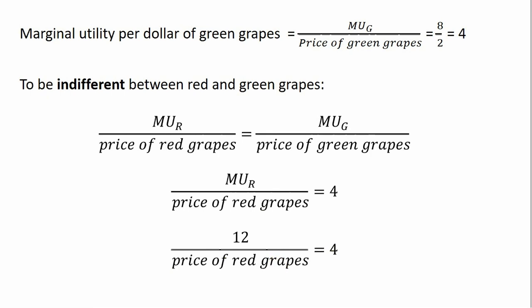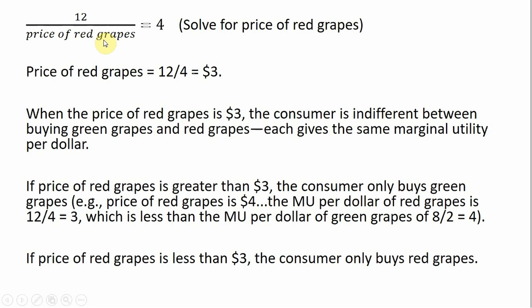What price of red grapes would leave this consumer indifferent between consuming red grapes and green grapes? Solving the equation for the price of red grapes, we find that price is $3. When the price of red grapes is $3, the consumer is indifferent between buying green grapes and red grapes, because each gives the same marginal utility per dollar — the same bang for the buck.